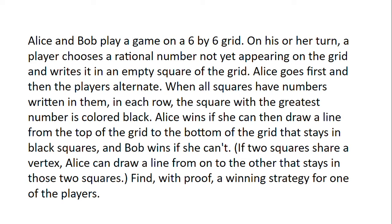Alice and Bob play a game on a 6x6 grid. On his or her turn, a player chooses a rational number not yet appearing on the grid and writes it in an empty square of the grid. Alice goes first, and then the players alternate. When all squares have numbers written in them, in each row the square with the greatest number is coloured black. Alice wins if she can then draw a line from the top of the grid to the bottom of the grid that stays in black squares, and Bob wins if she can't.